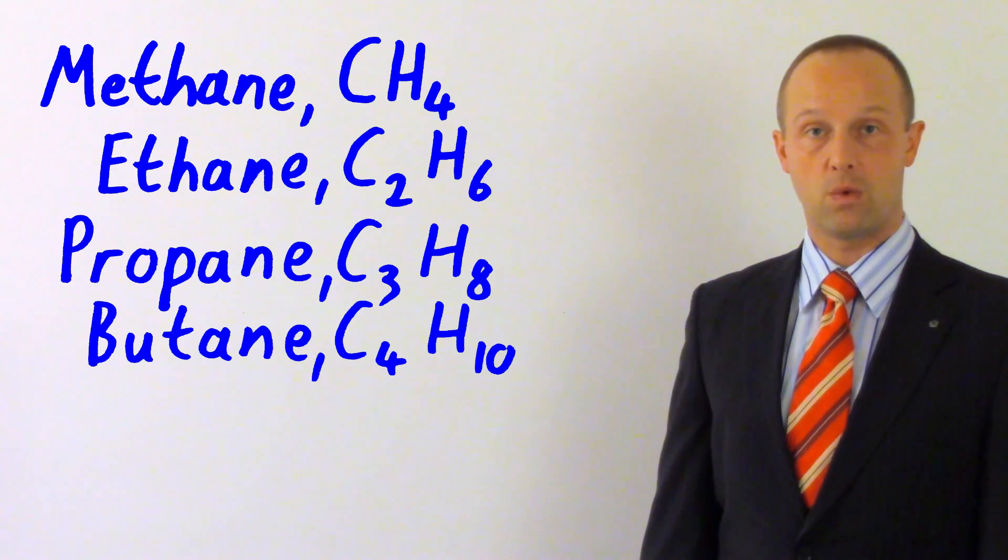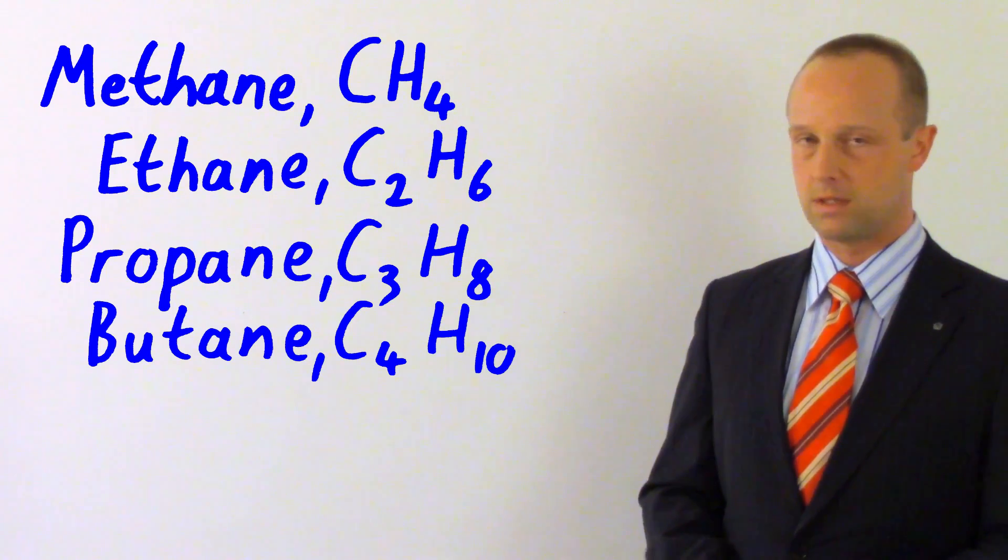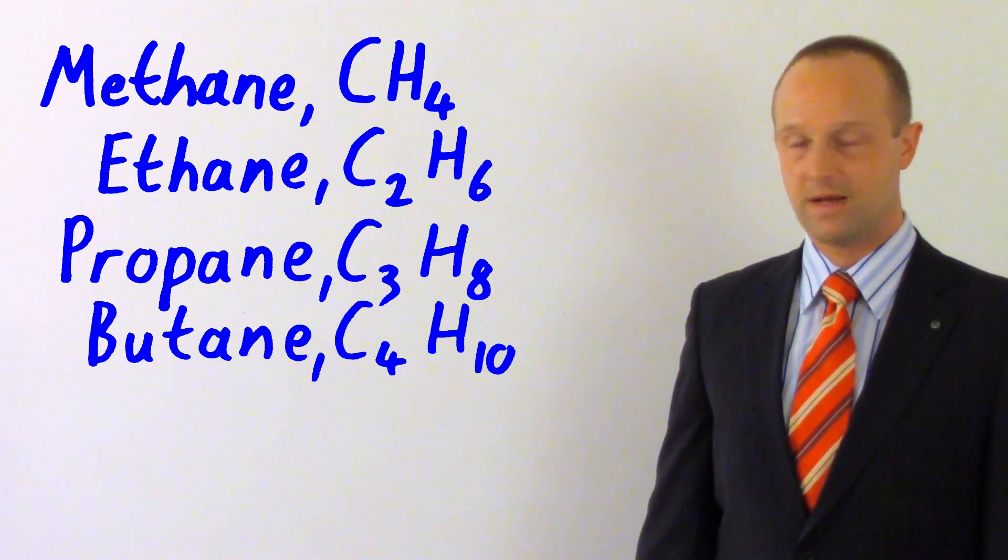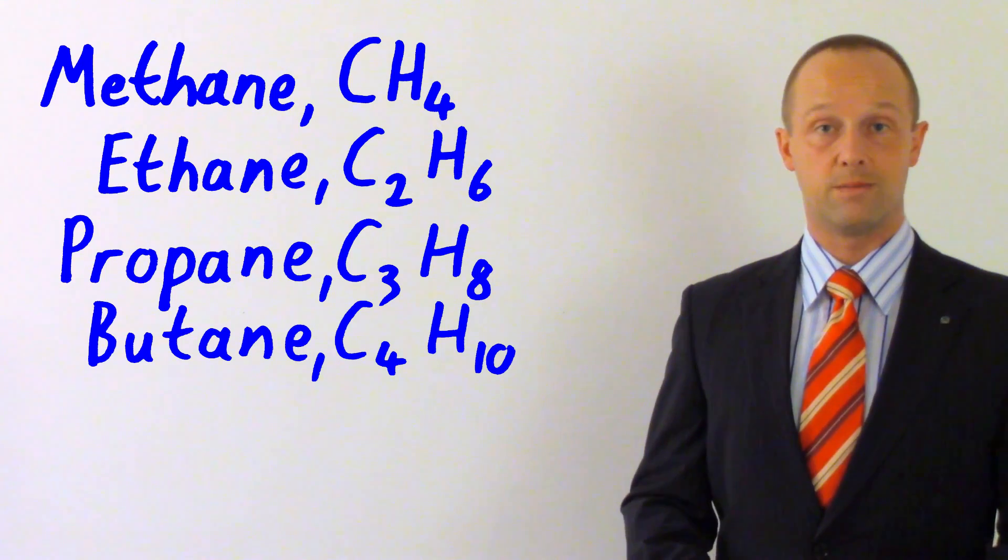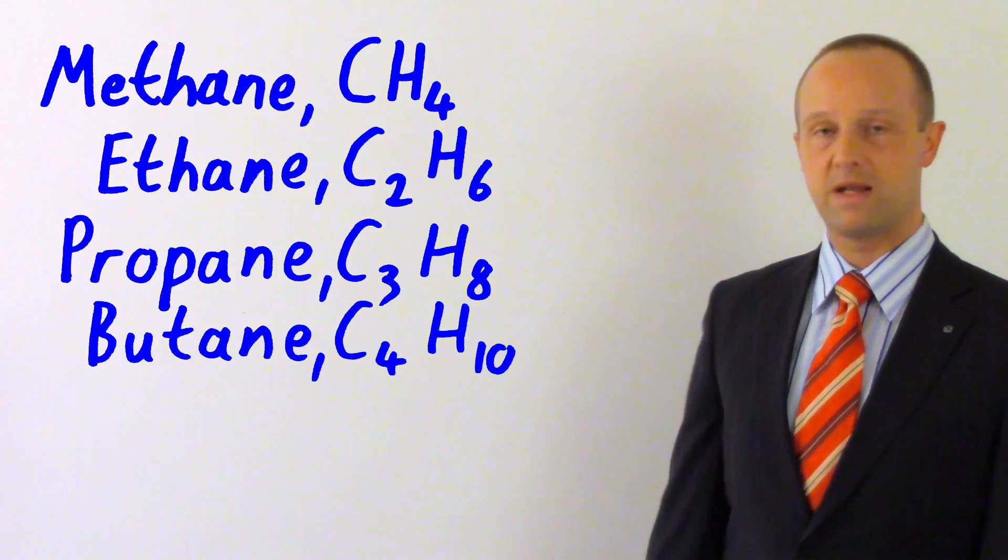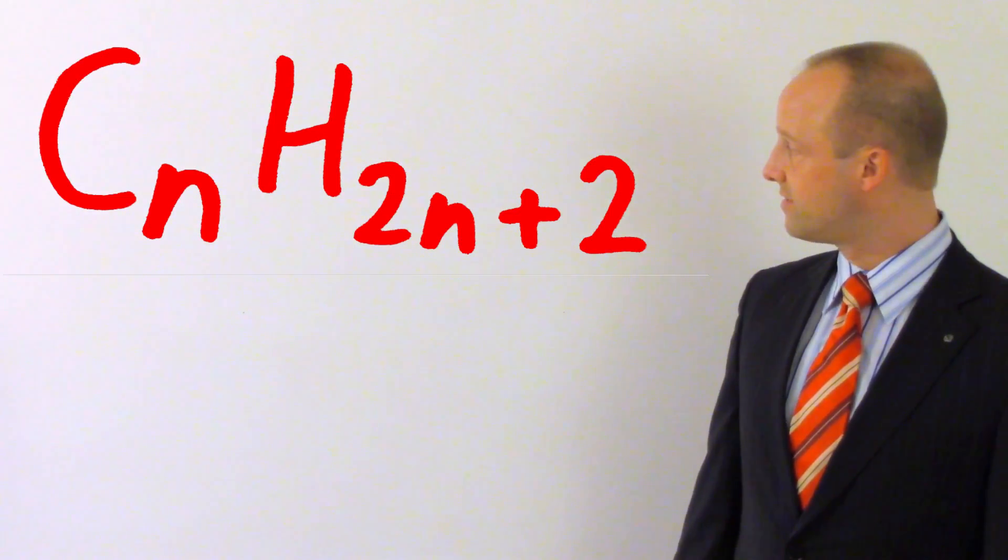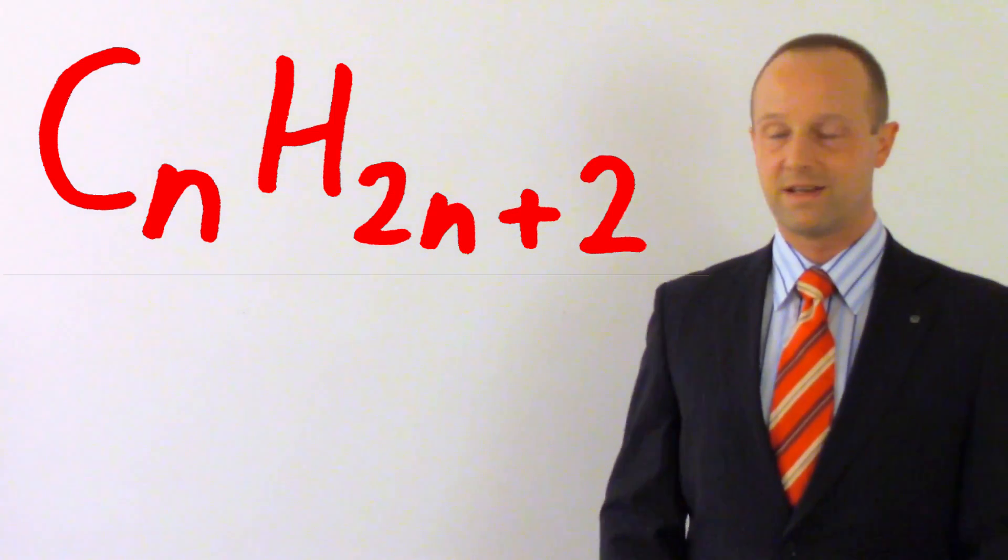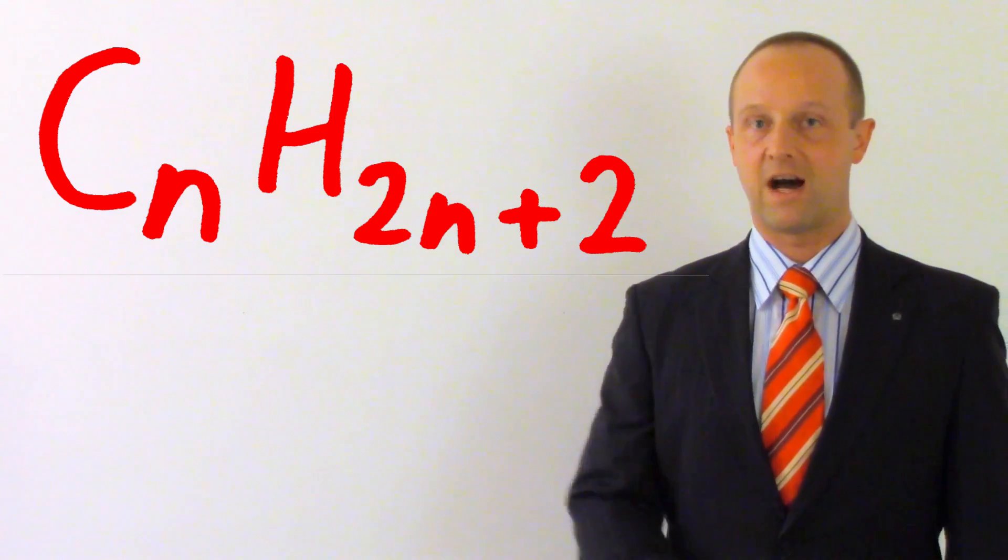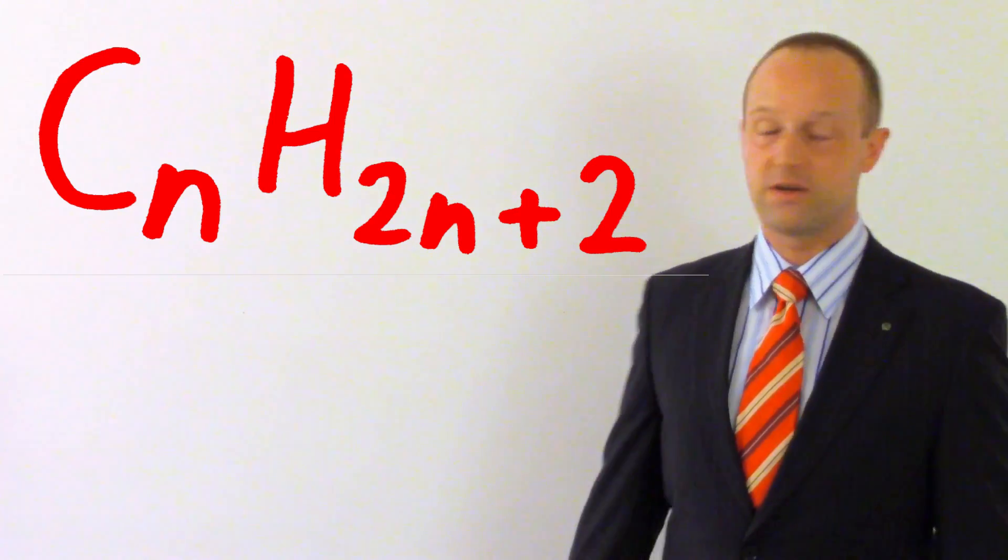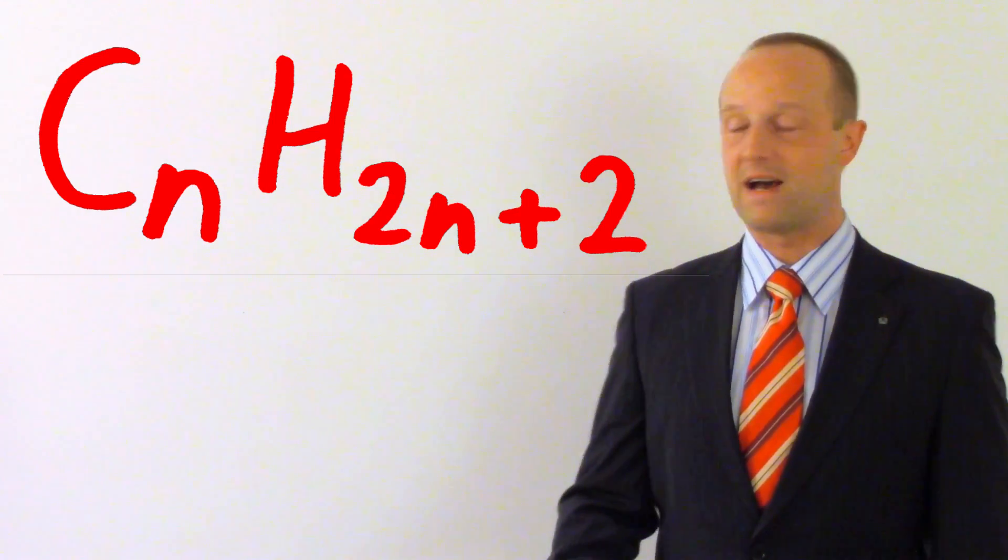There's a pattern here which we can express in a more general form. The number of hydrogens is always equal to double the number of carbons plus two. Chemists represent this with a formula: CnH2n+2. All that means is whatever number of carbons you've got, the hydrogens is just double that plus two. That n stands for any number at all.